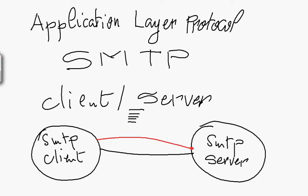This TCP connection has two endpoints. On the client side, the process will open a port — say 50,000 — chosen by the operating system. On the SMTP server side, the port used will be 25. Port 25 is the default port used by SMTP protocol; any SMTP service running and listening will use port 25 by default, though you can change it.